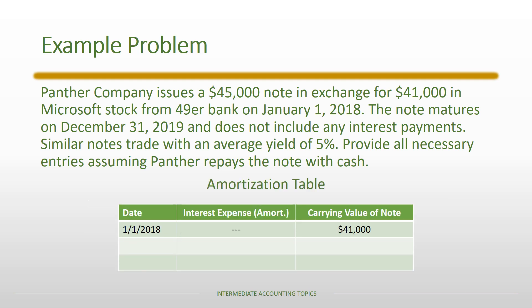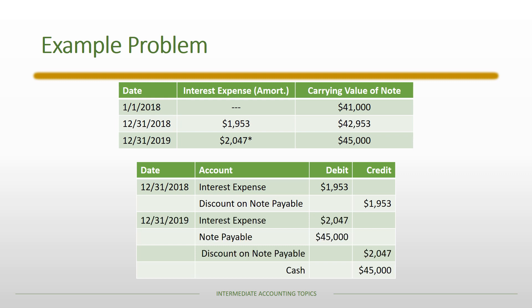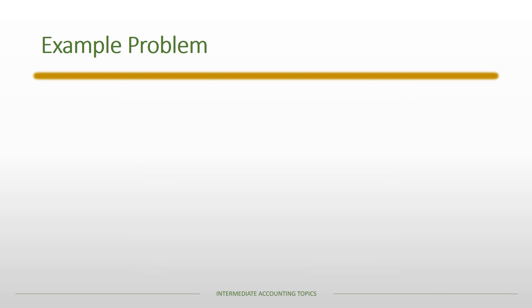Next, we create an amortization table. There are no payments, so the only items are interest expense and amortization of the note discount. We start with the initial carrying value and accrue interest expense at each fiscal year end, amortizing the note discount. There's a small asterisk on the second year because rounding means the amount doesn't come out exactly — we adjust it so the final carrying value equals exactly $45,000. Journal entries follow the amortization table: on 12/31/2018, accrue interest expense and amortize the discount; repeat in 2019, and also record the repayment of the $45,000 face value at maturity.